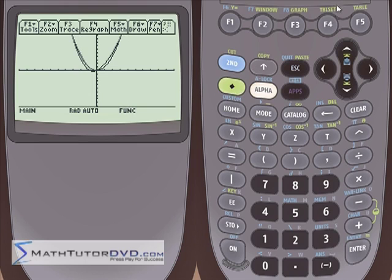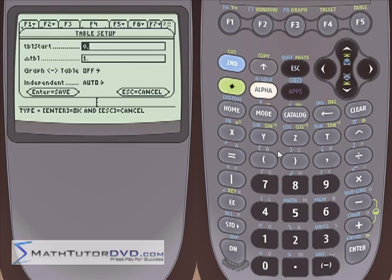What you need to do is go into table set. That's the first thing we're going to do. So let's go and hit green, go up into table set, and this is called table setup. This lets us set up the boundaries of our table to tell the calculator what to do.